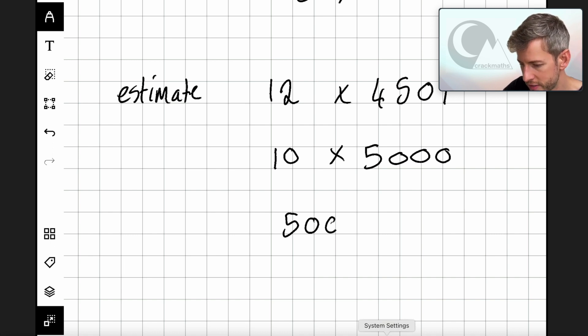So let's do the calculation. 5 times 1 is 5, and then add the zeros: 1, 2, 3, 4. Here we go. So our estimate for 12 times 4501 is 10 times 5000, which equals 50,000. Let's go have a look at some scenario questions on Crack Maths.